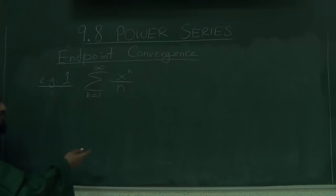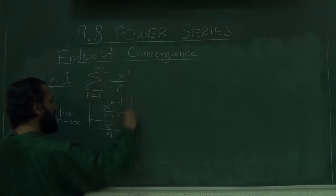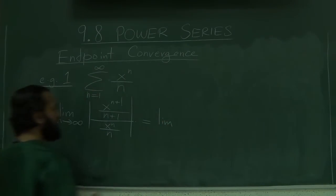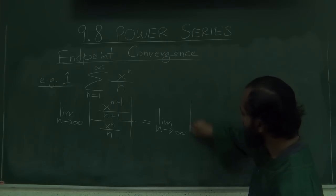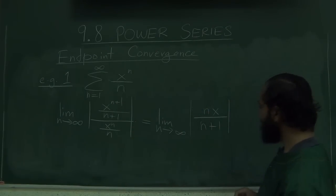We'll use ratio test again as our investigative tool here. We're going to take the ratio of the n plus 1's term over the n's term. So this will be x to the n plus 1 over n plus 1, all of this over x to the n over n. And this equals limit as n goes to infinity, so this x to the n will cancel with this, we'll have x at the top and the n will come to the top too, we have nx over n plus 1.